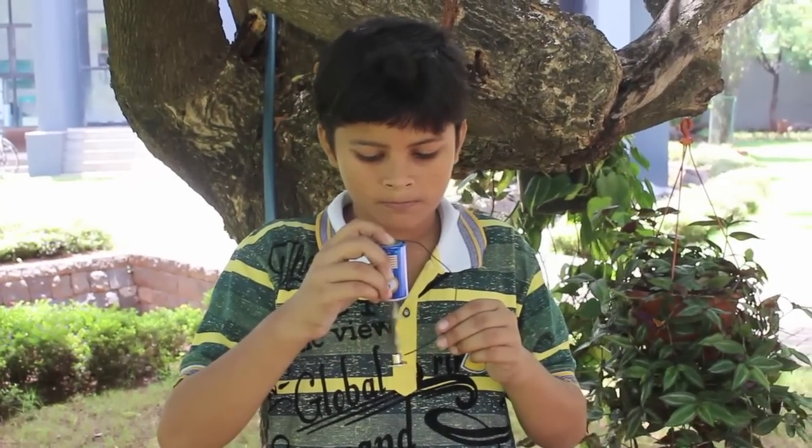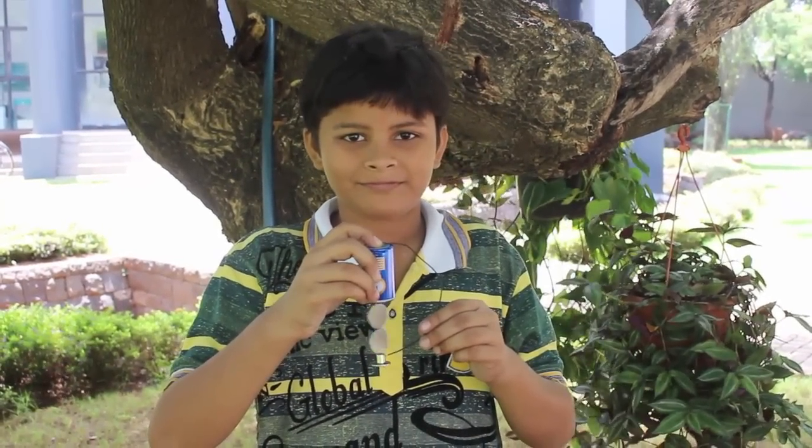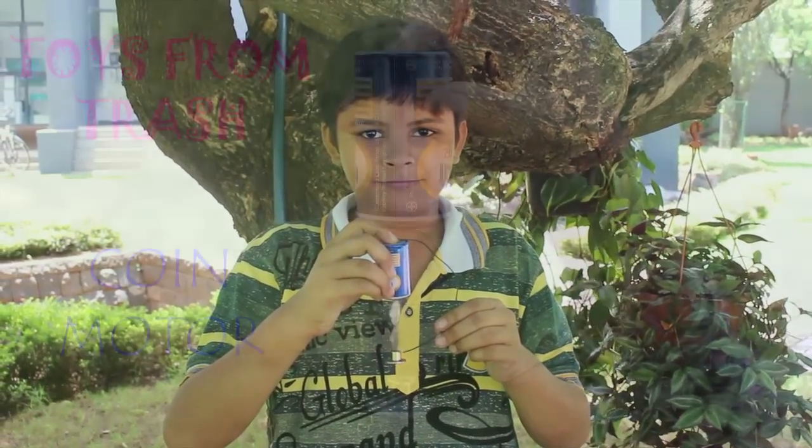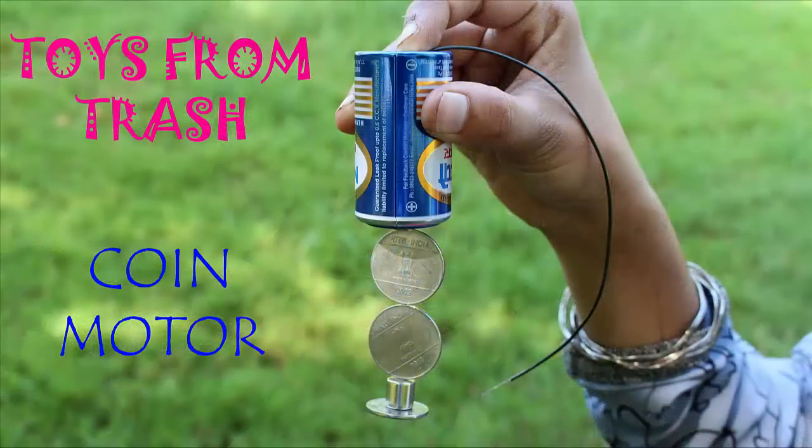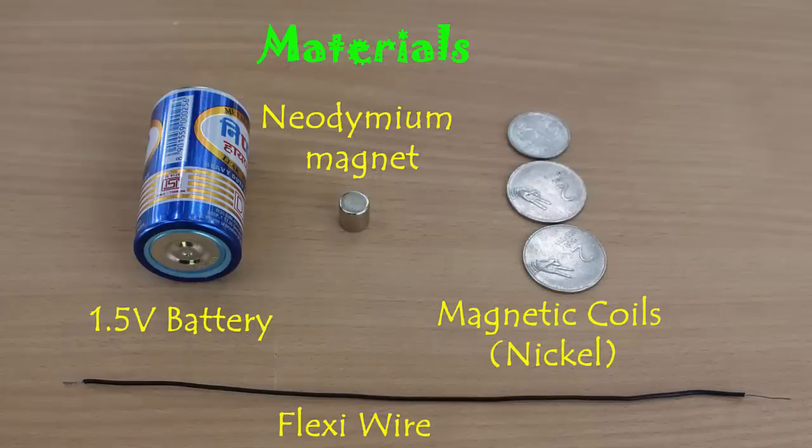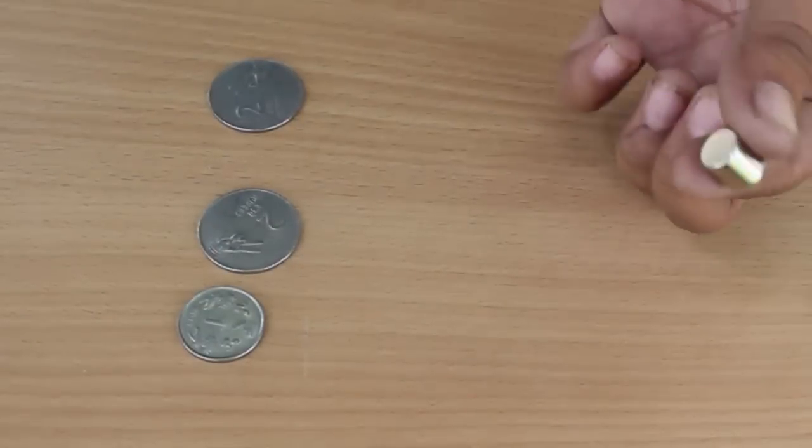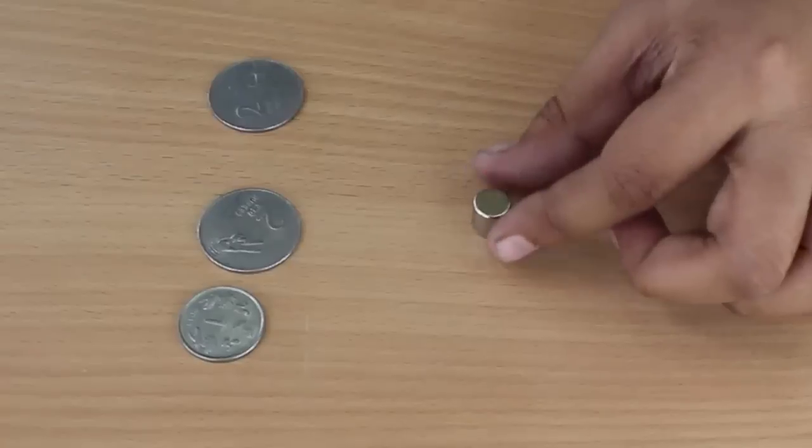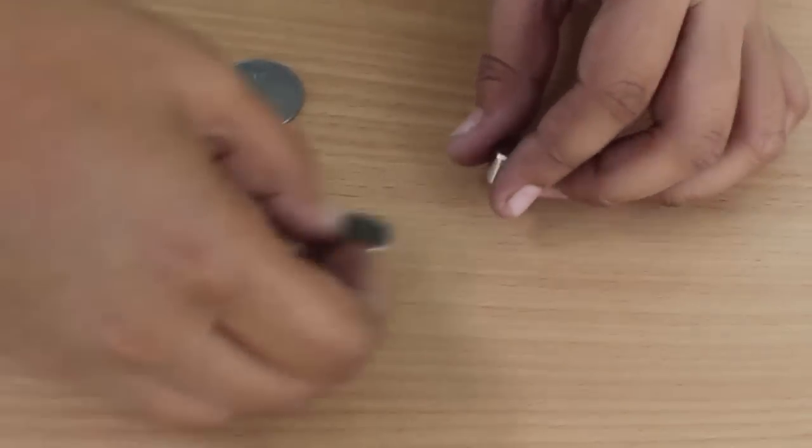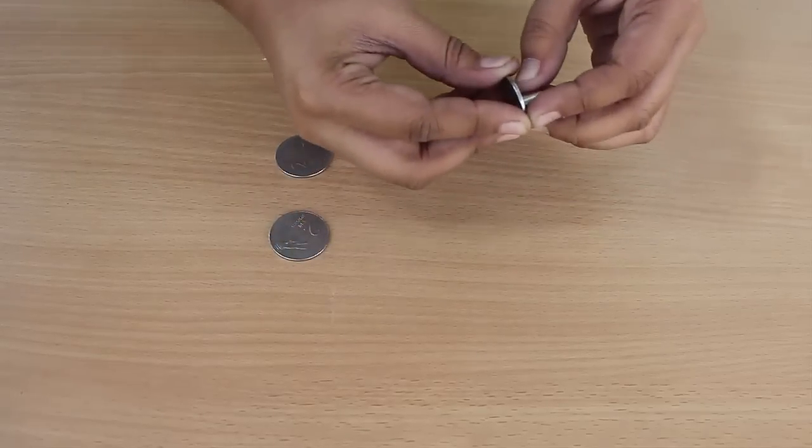What you are seeing is a very splendid homopolar motor. To make this coin motor you require a strong cylindrical neodymium magnet, a 1.5 volt battery, and three coins which are attracted to the strong magnet. These coins would have an element of steel and nickel in them.